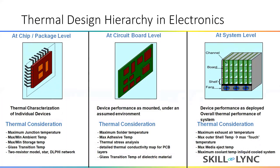From the chip level to system level, we cannot put all the details, so we do a thermal characterization of the actual chip and then build resistor models. There are different resistor models: the two-resistor model, the star resistor model, or the Delphi network. Based on the complexity required in the analysis, we build those thermal characterization models, which are then used at the circuit level or the system level.